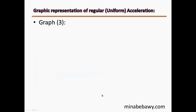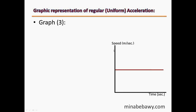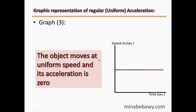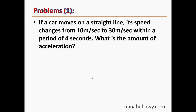The final graph we studied before in the three graphs for uniform speed: it is between speed in m/s over the y-axis and time in seconds over the x-axis, represented by a horizontal straight line parallel to the time axis. By increasing the time, the speed remains constant, meaning this object moves at uniform or constant speed, and its acceleration equals zero.